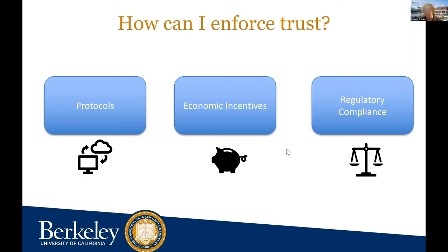France passed a law requiring data centers to be operated by French nationals. Another example is that GDPR has this notion of 'right to be forgotten' — how on earth do you implement that in a data structure like a blockchain, which is by definition append-only? Together, I think this merging of protocol design, economic incentives, and regulatory compliance is really going to change how we design data processing systems in future years.